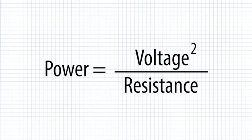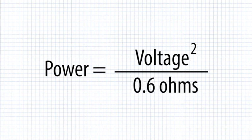After you've recorded all your data, calculate the power at each distance by using the formula power equals voltage squared divided by resistance. For resistance, you can use 0.6 ohms.